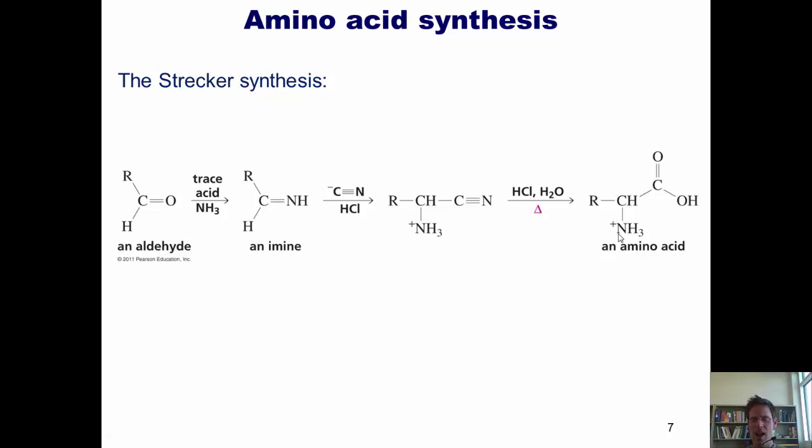Now, I want you to recognize that every one of these synthetic routes to amino acids that I've just shown you do not give you enantiopure amino acids. In fact, because every one of these syntheses uses achiral materials throughout, all the amino acid products will also be expected to be achiral. That is, they will come out the end of the assembly line all completely racemic.